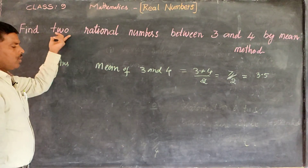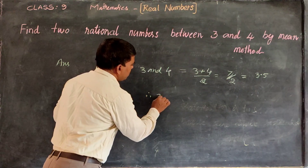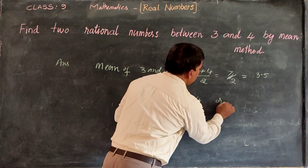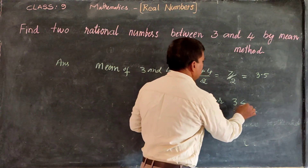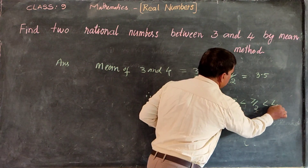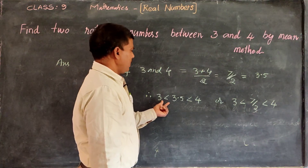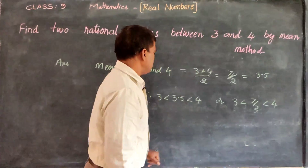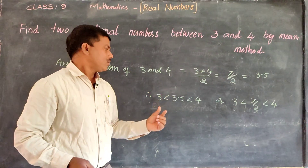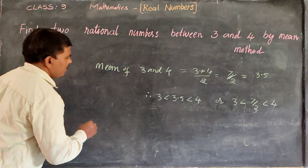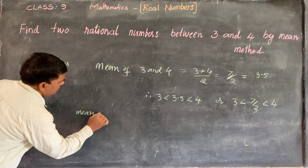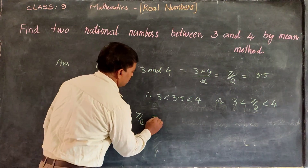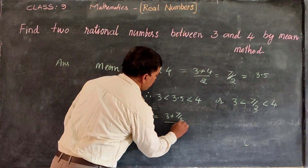We have to find two numbers. So therefore, 3 less than 3.5 less than 4, or 3 less than 7 by 2 less than 4. Now, for 3 and 4 we have to find another number, so take these two numbers. The mean of 3 and 7 by 2 is equal to 3 plus 7 by 2, all divided by 2.